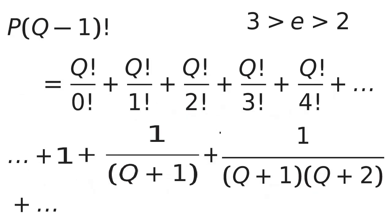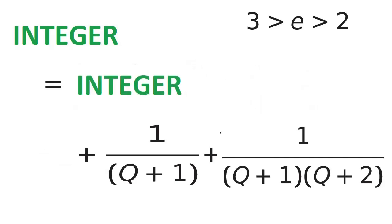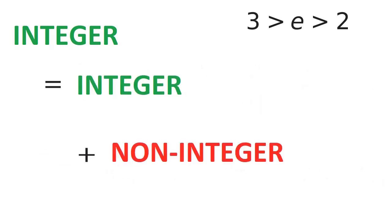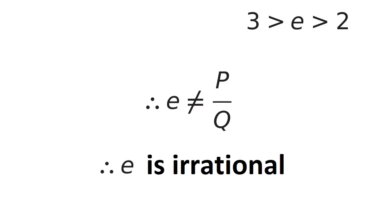So where does that leave us? These two expressions are each integers. Because that final part of the sum is less than 1 but positive, it must be a non-integer. We are left with an integer which is the sum of an integer and a non-integer. But this is impossible. Thus, our premise that e is a ratio of two integers must be false, and e is irrational.